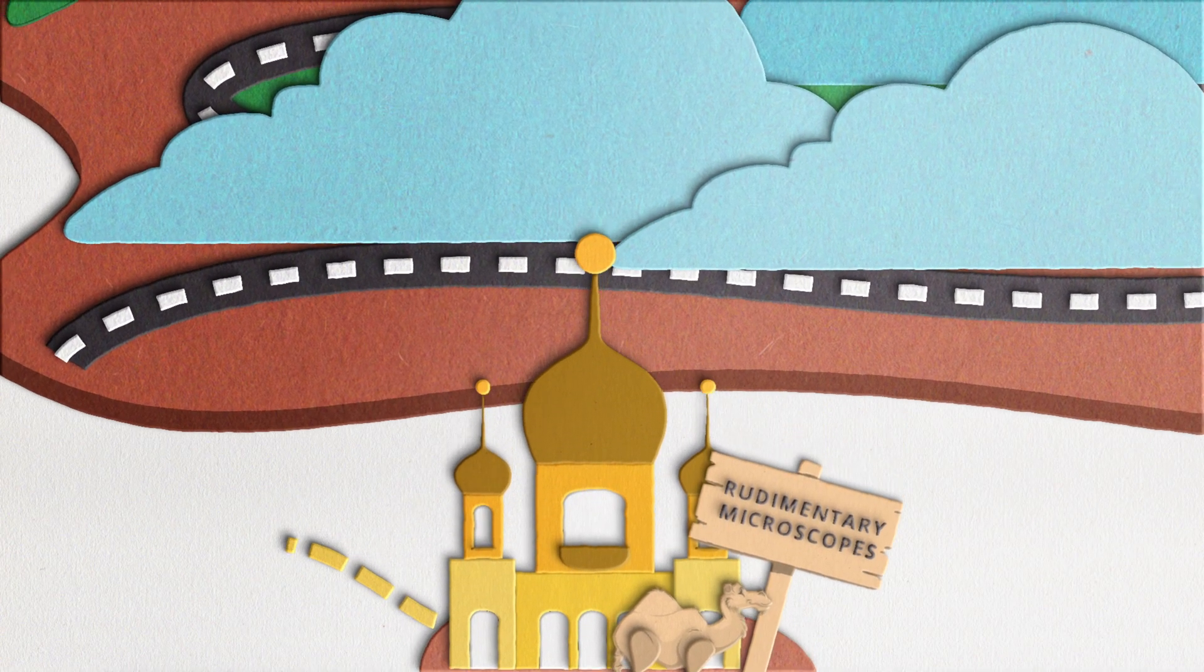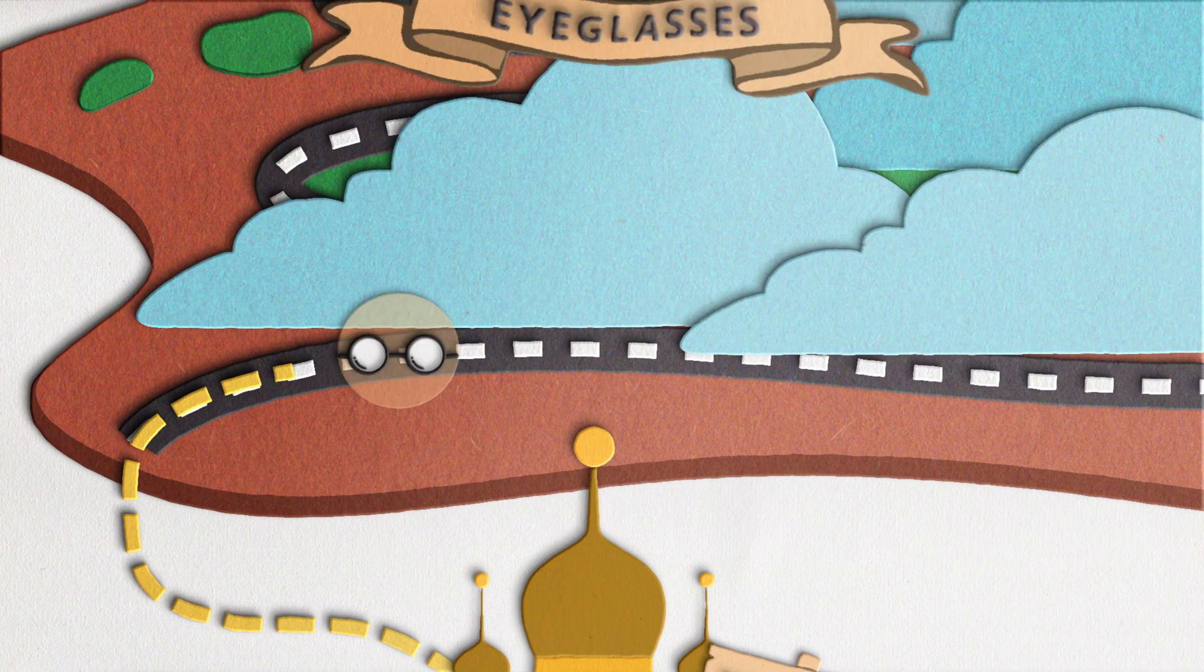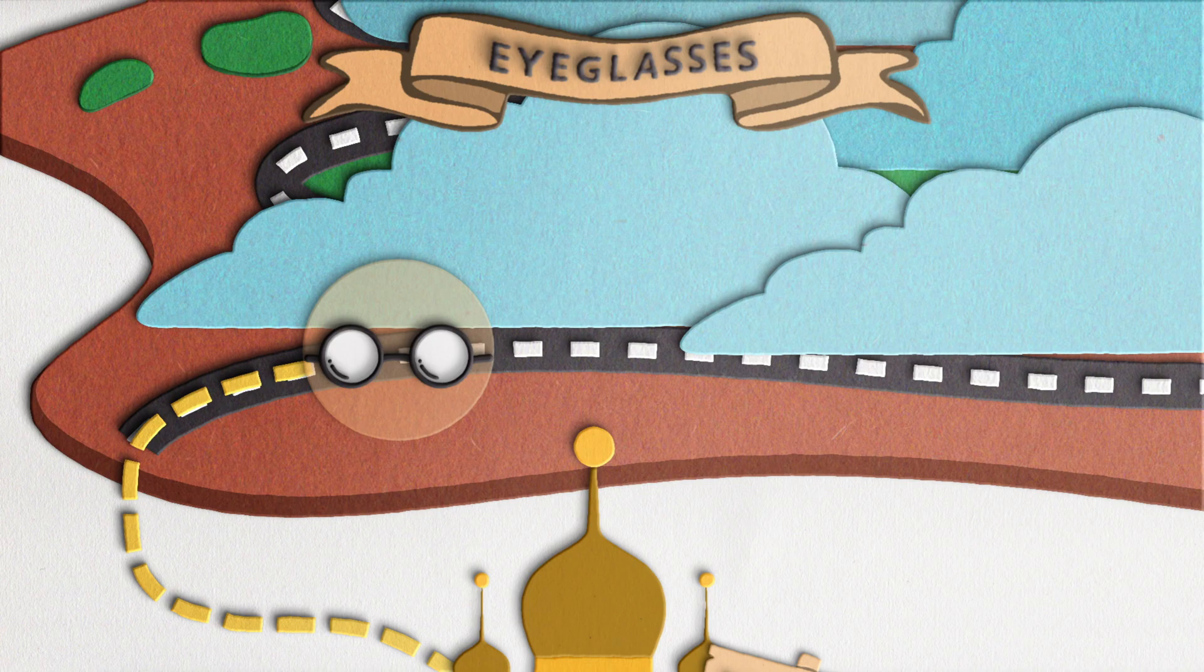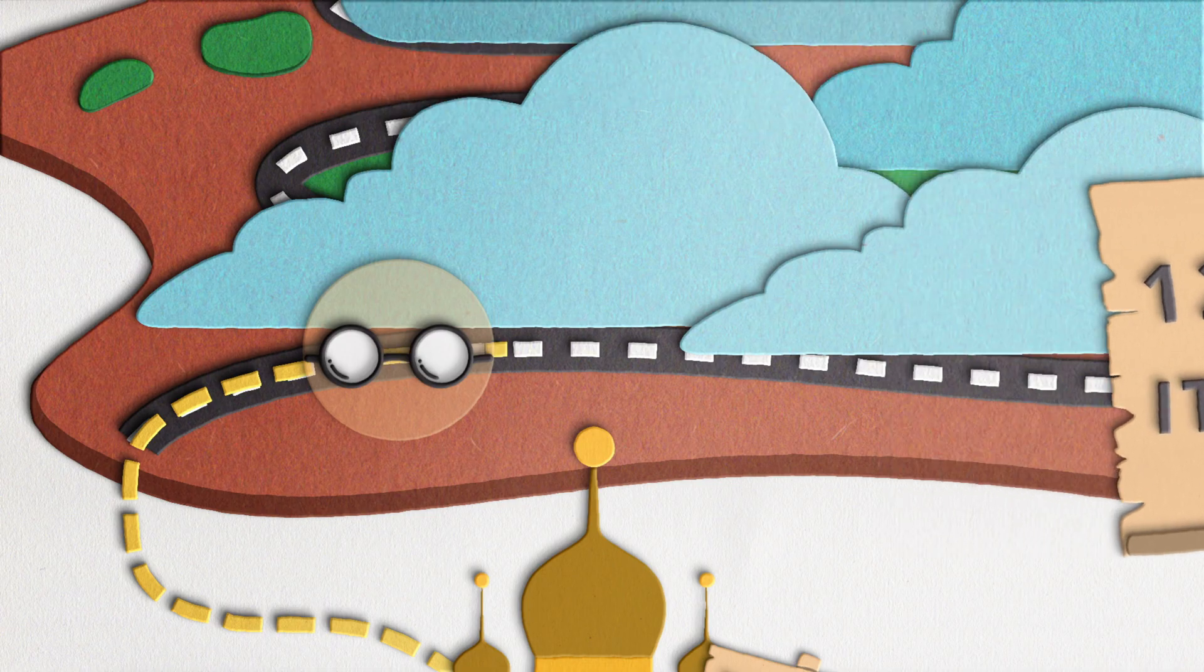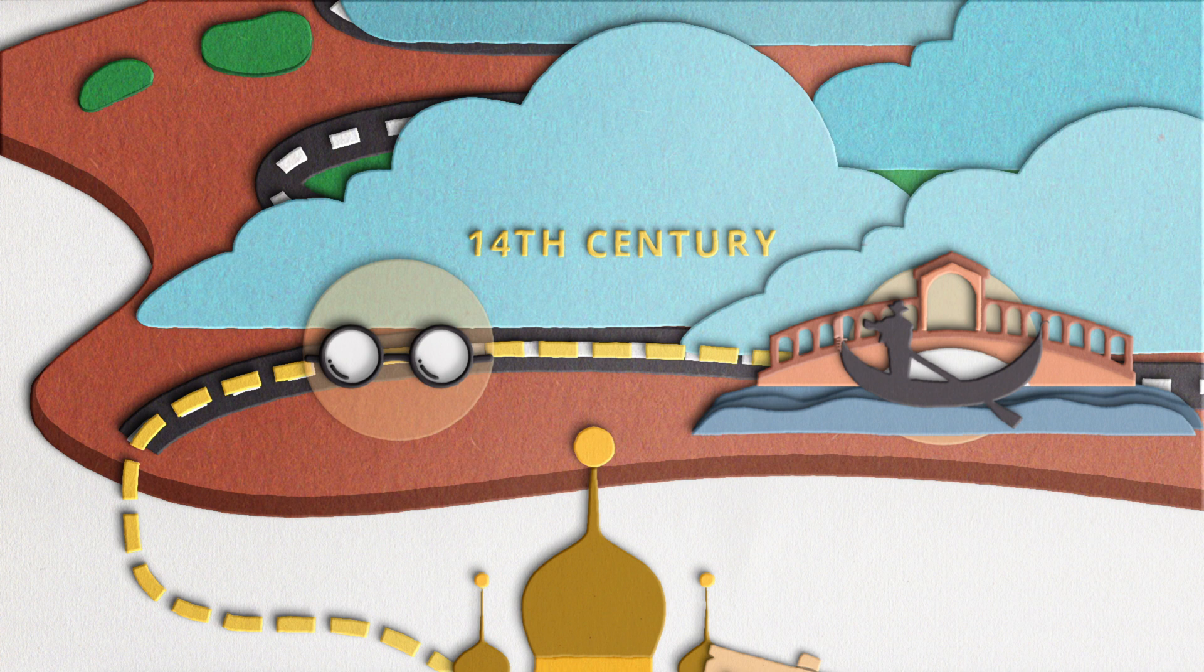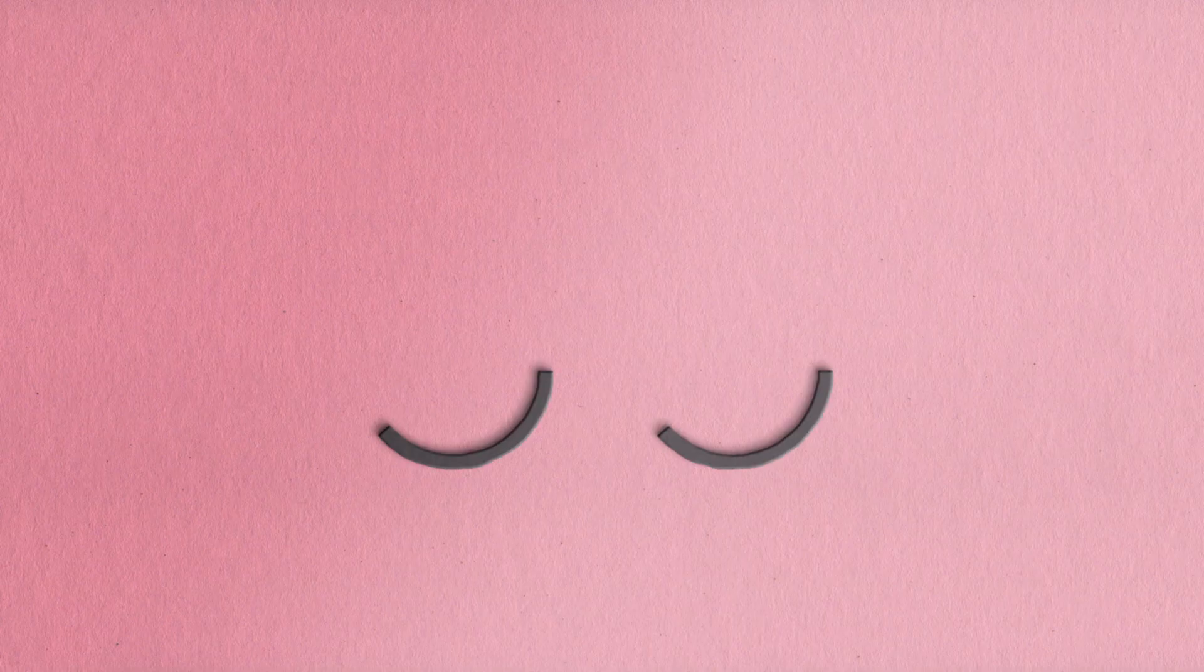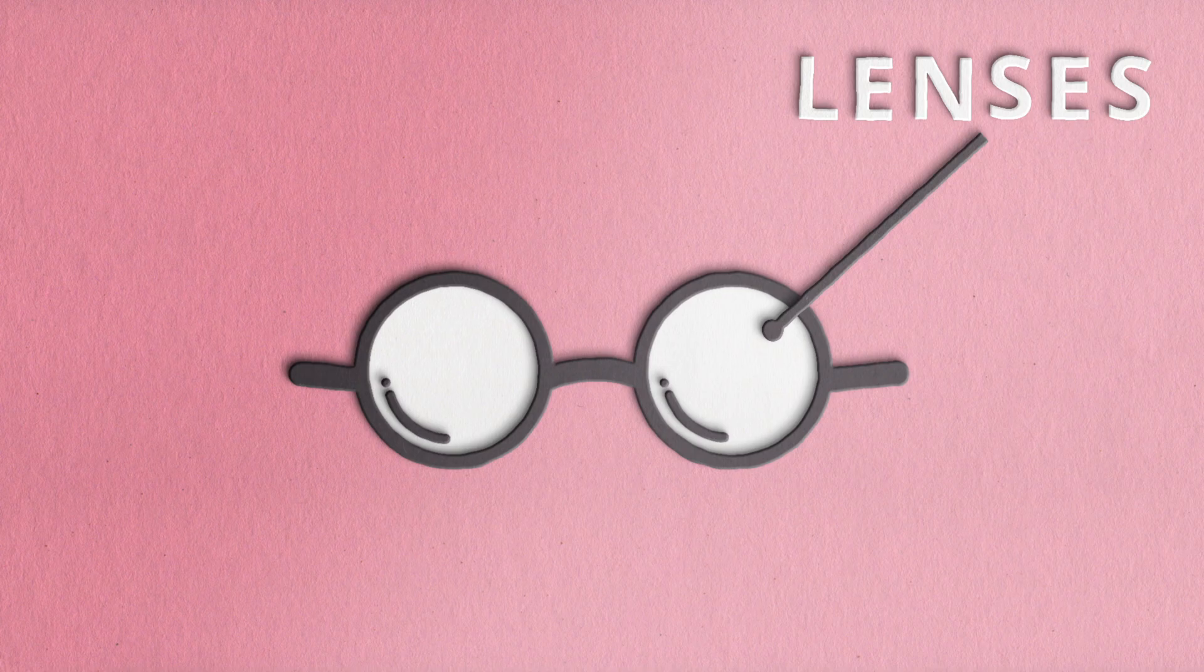The first main step towards the invention of the microscope as we know of today was the invention of eyeglasses. The earliest known reference to eyeglasses dates back to 1286 in Italy. Fast forward to the 14th century, the production and sales of eyeglasses had become a fully-fledged industry with registered guilds in major cities like Venice. As you know, eyeglasses are made up of lenses, which are one of the most important components of microscopes.